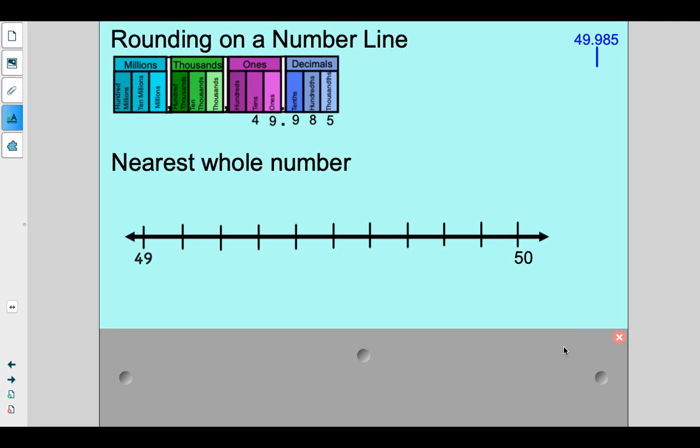So now our job is to place this number 49 and 985 thousandths on the number line, but then what do these little things mean? So we're going to the nearest whole number. So let's check this out.